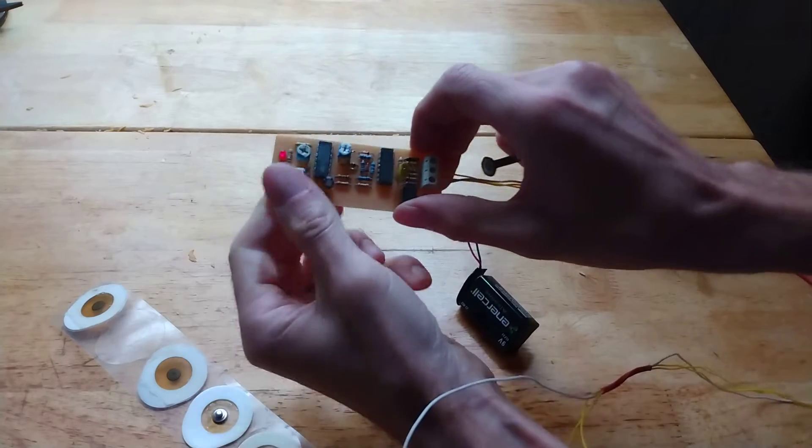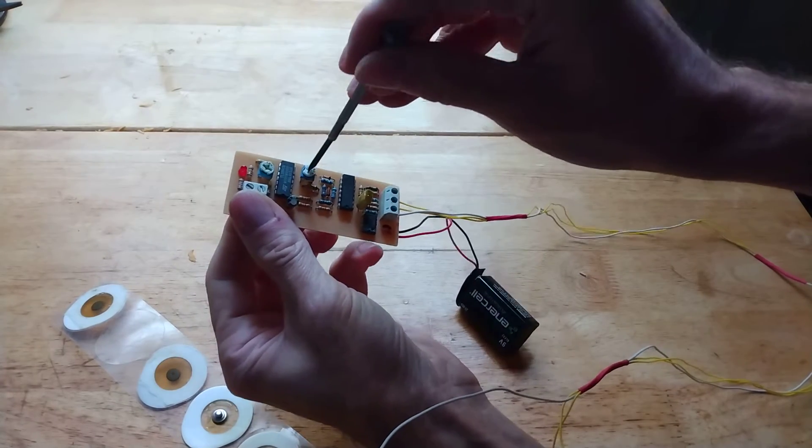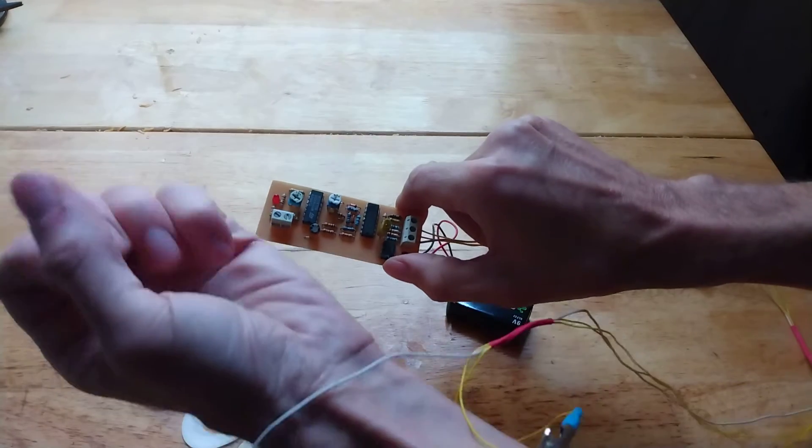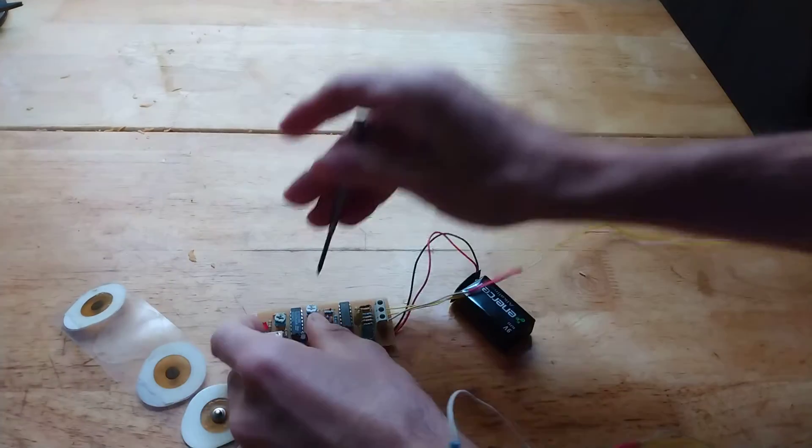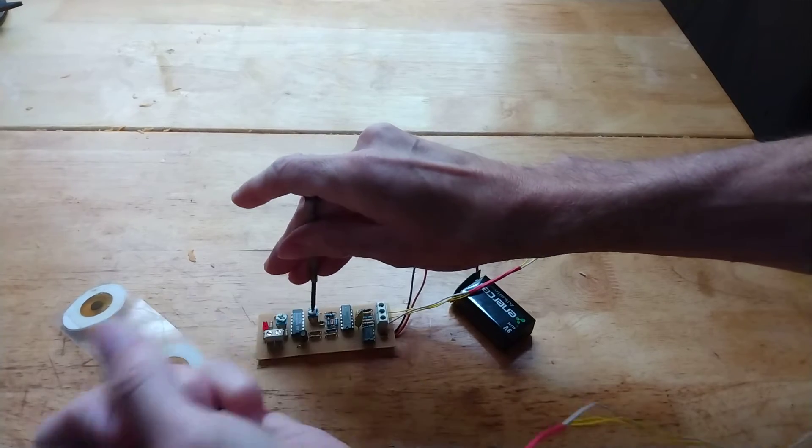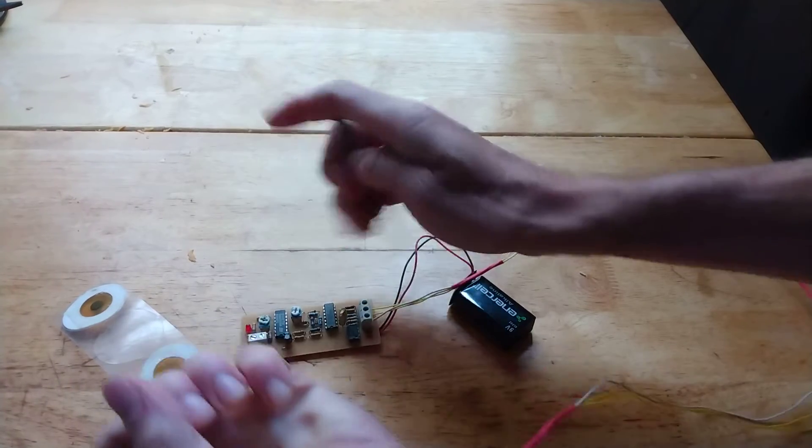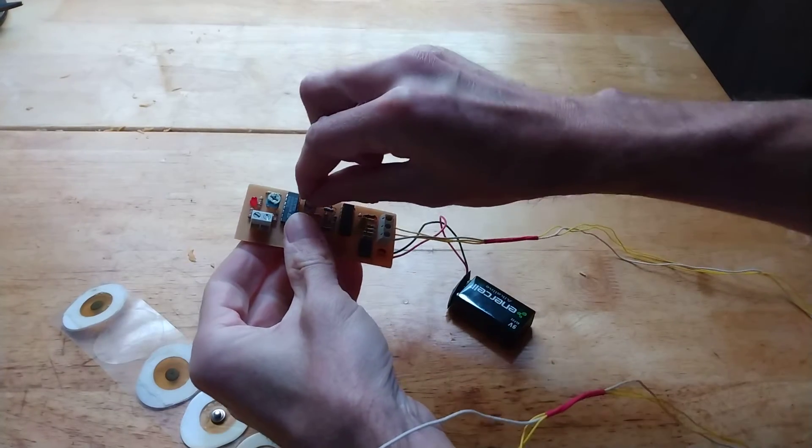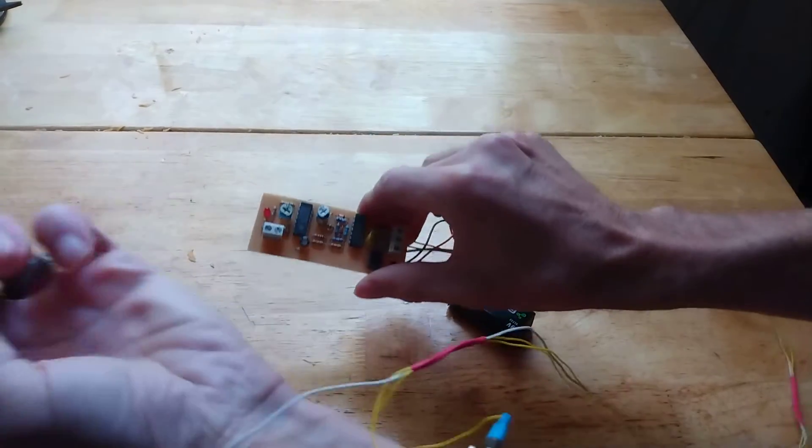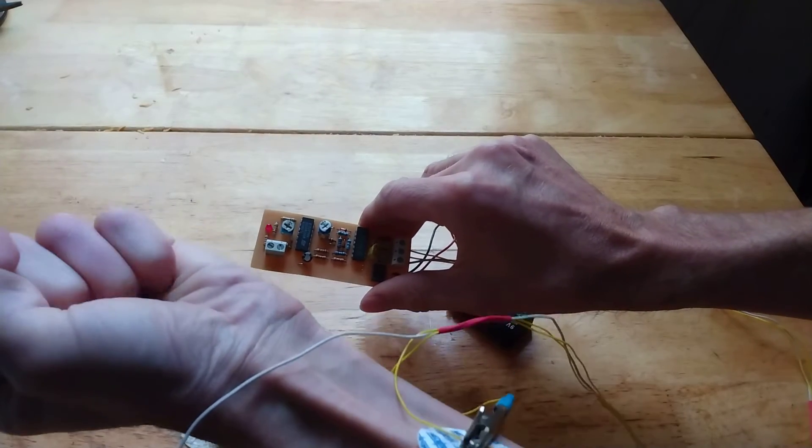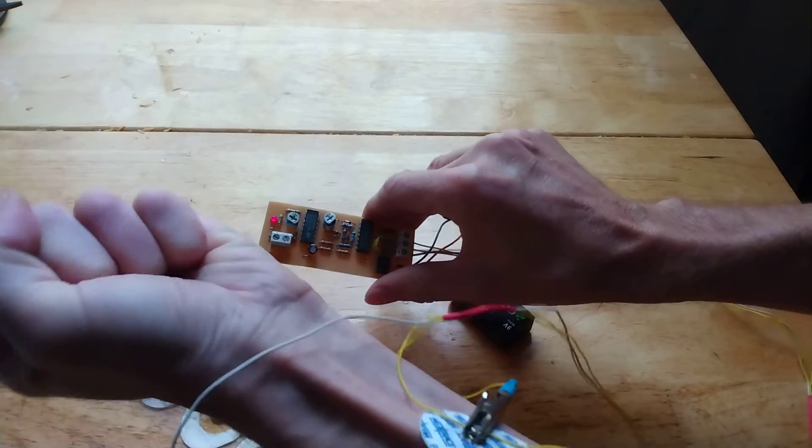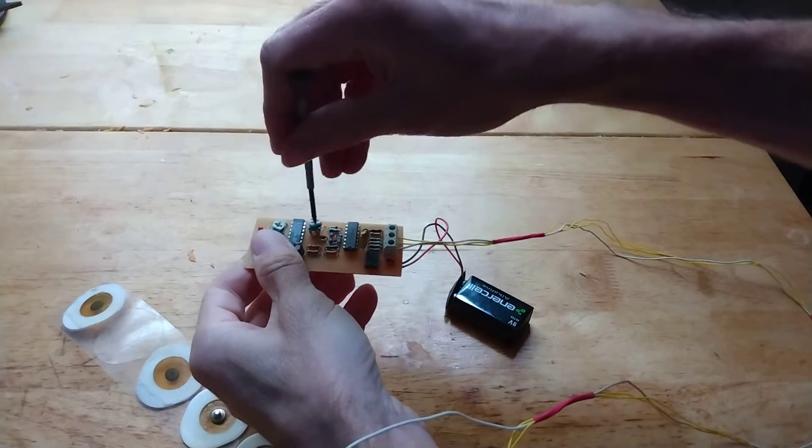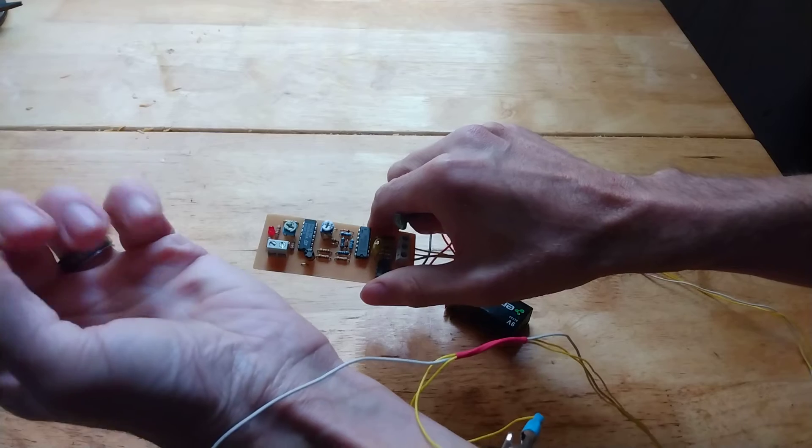This other resistance controls the gain of the circuit. So here I need - if I decrease it, I need to contract way more in order to turn on the LED. Maybe a little bit more gain. I see I have to contract really hard now, but we can control that gain. Now I don't have to contract as hard. See, so the circuit works.